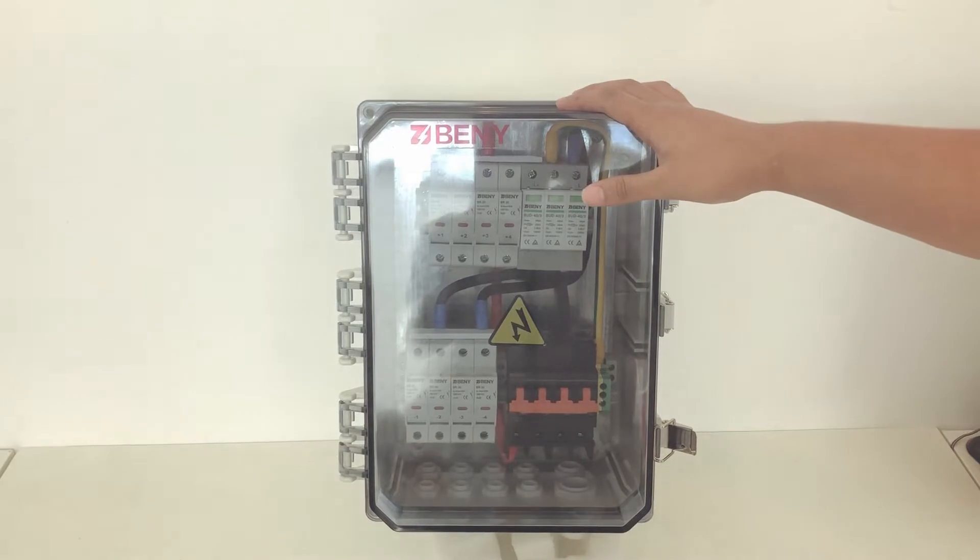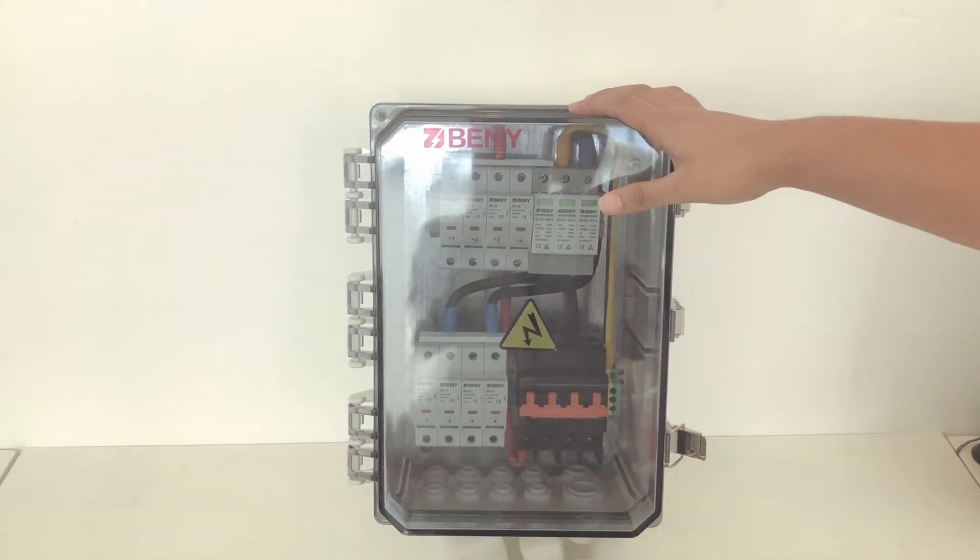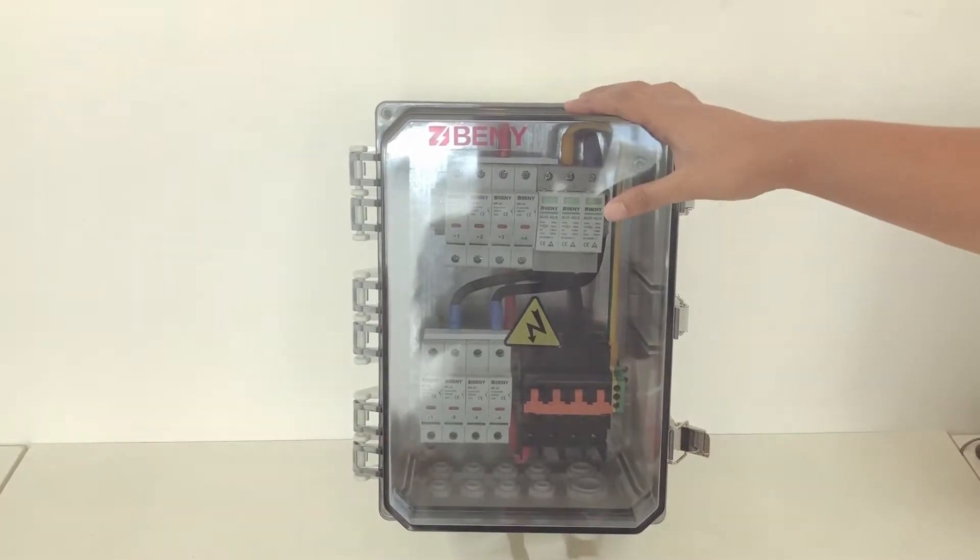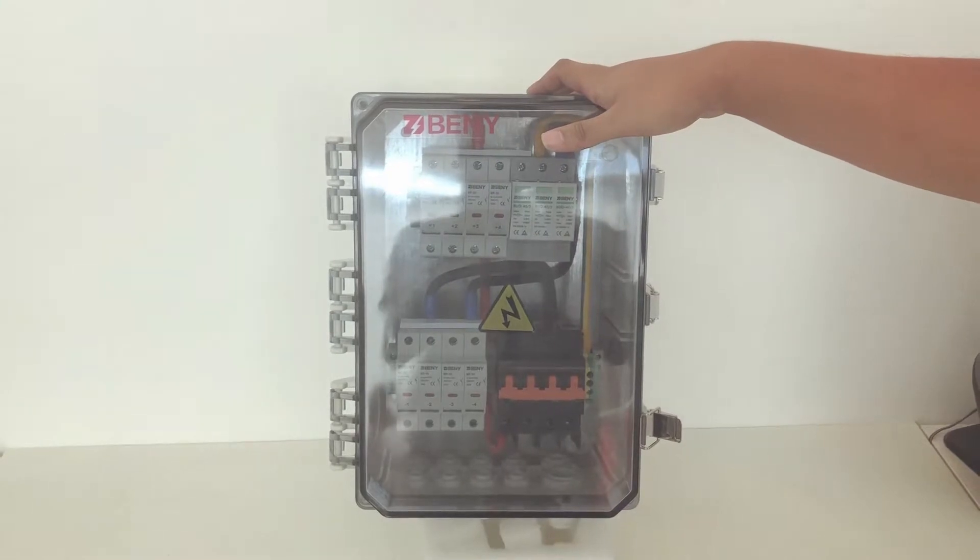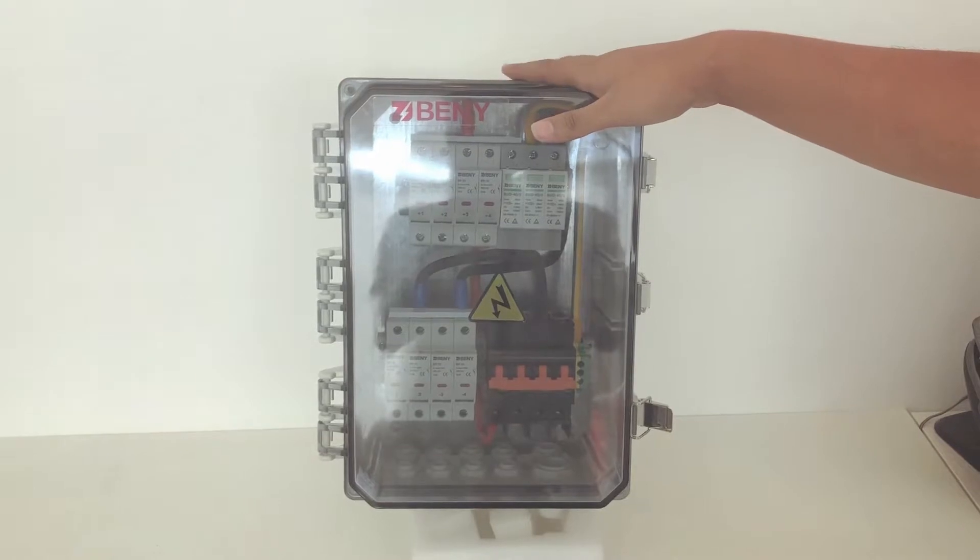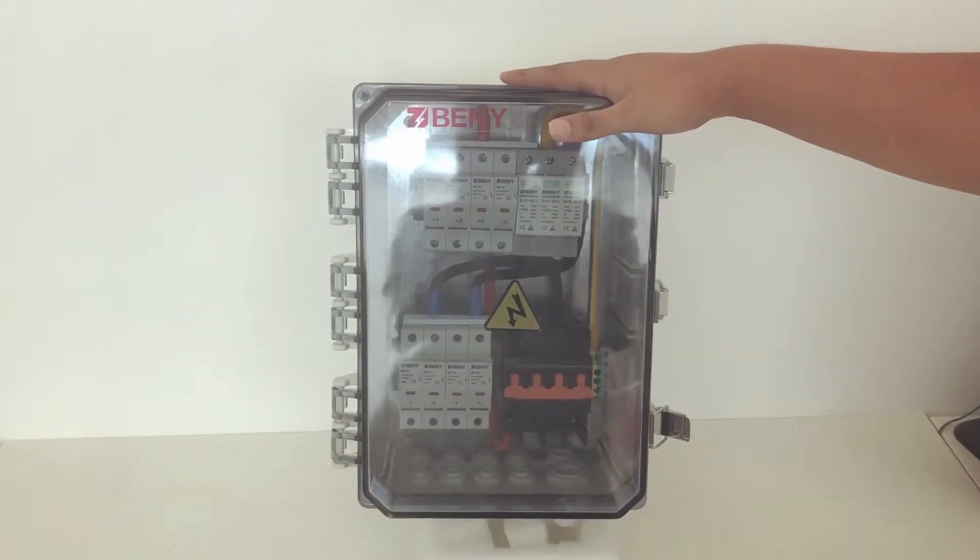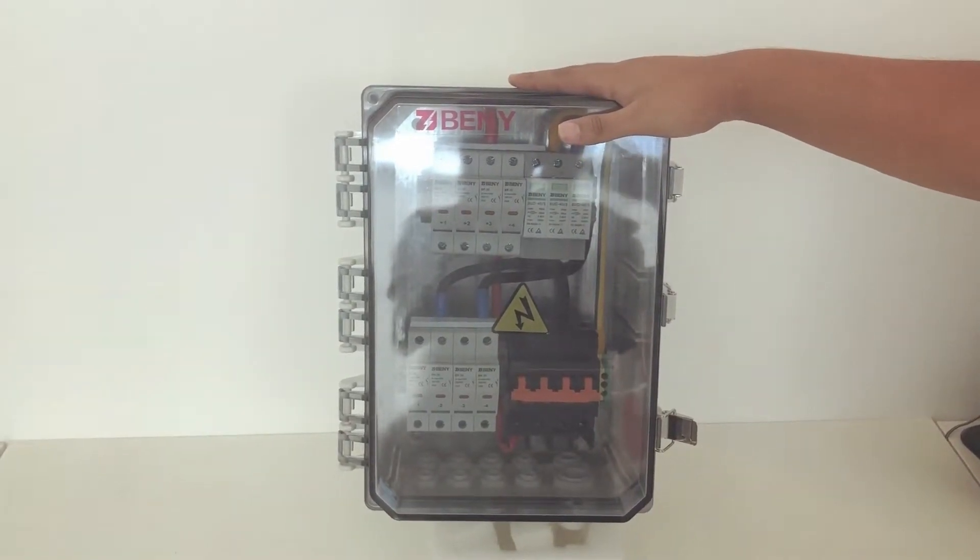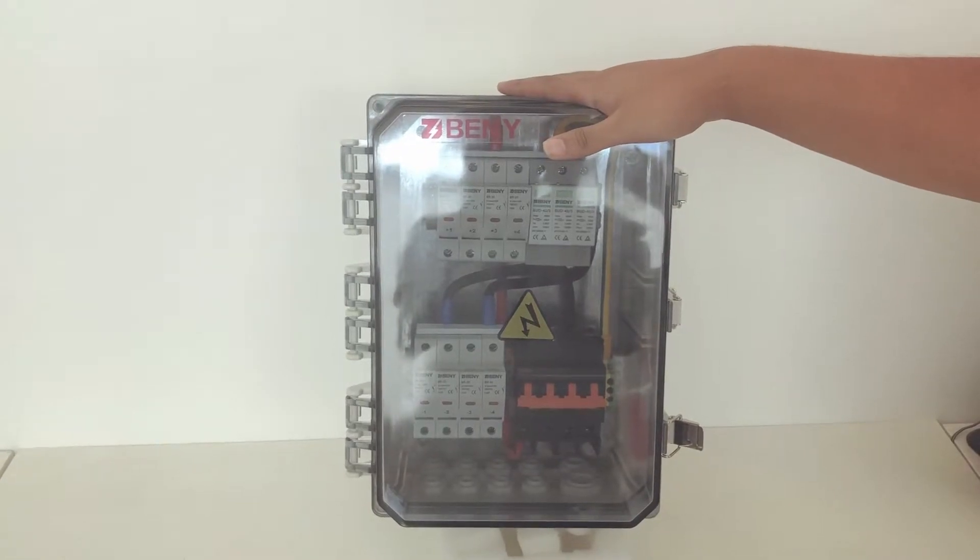So this is our newest product, the ZJ Benny 4-in, 1-out DC string combiner box. The DC isolator switch has a maximum of 63 amp input at 1000 volts. The enclosure rating is IP65, and this combiner box is also UV resistant.